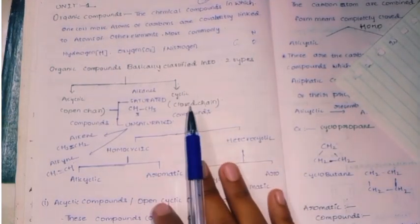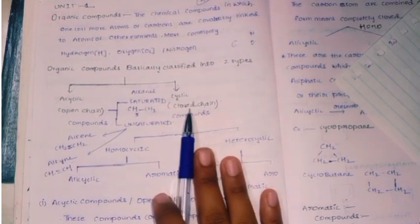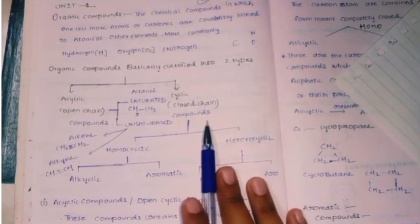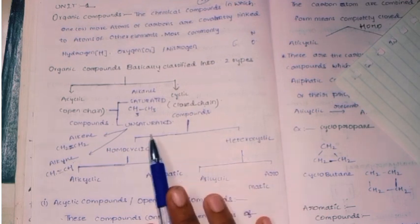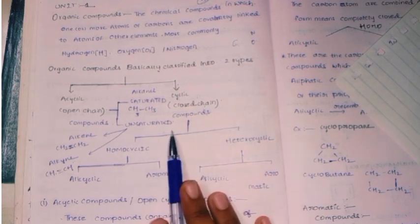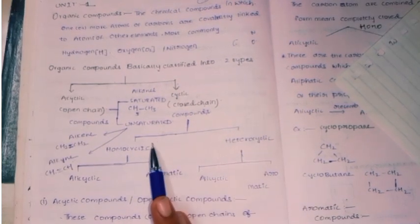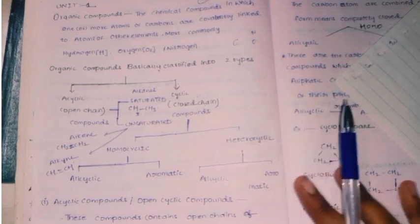Next, we need to use cyclic classification. Cyclic compounds are also called closed compounds. Closed compounds are also of two types: homocyclic and heterocyclic.